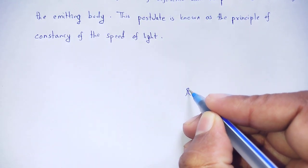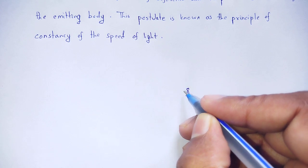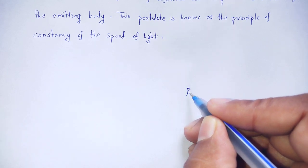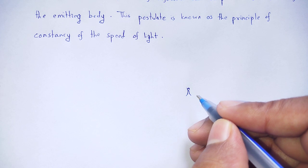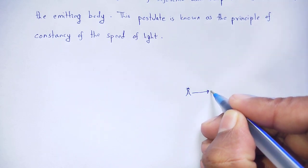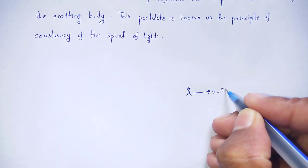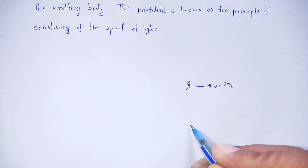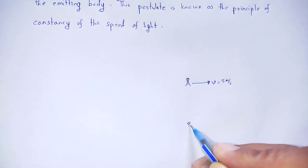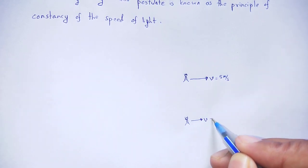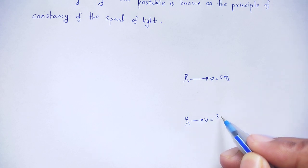Consider a person moving at a velocity of 5 meters per second. Another person is moving at a velocity of 3 meters per second. The observation of motion depends on the observer — this shows that motion is relative.